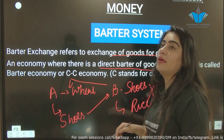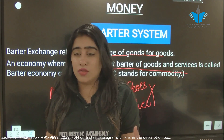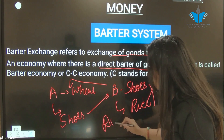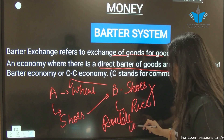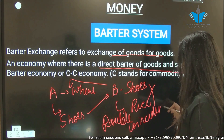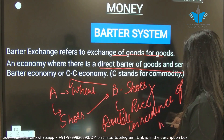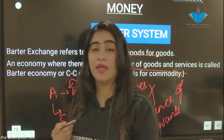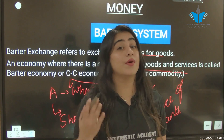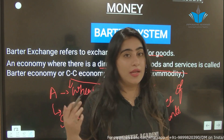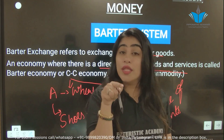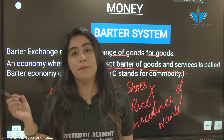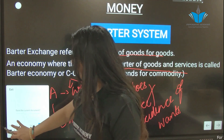B wants to give shoes but says: I need rice, not wheat. So this is the problem of double coincidence of wants. The thing you have is not necessarily what the other person wants — he might want any other thing, so he won't exchange his good with yours. Money was introduced to resolve this problem.